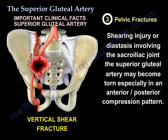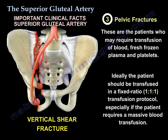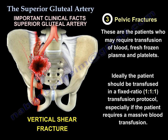This is especially true in anterior-posterior compression pattern injuries. These patients likely need blood, fresh frozen plasma, and platelets — ideally transfused in a 1:1:1 ratio, particularly if massive transfusion is required.